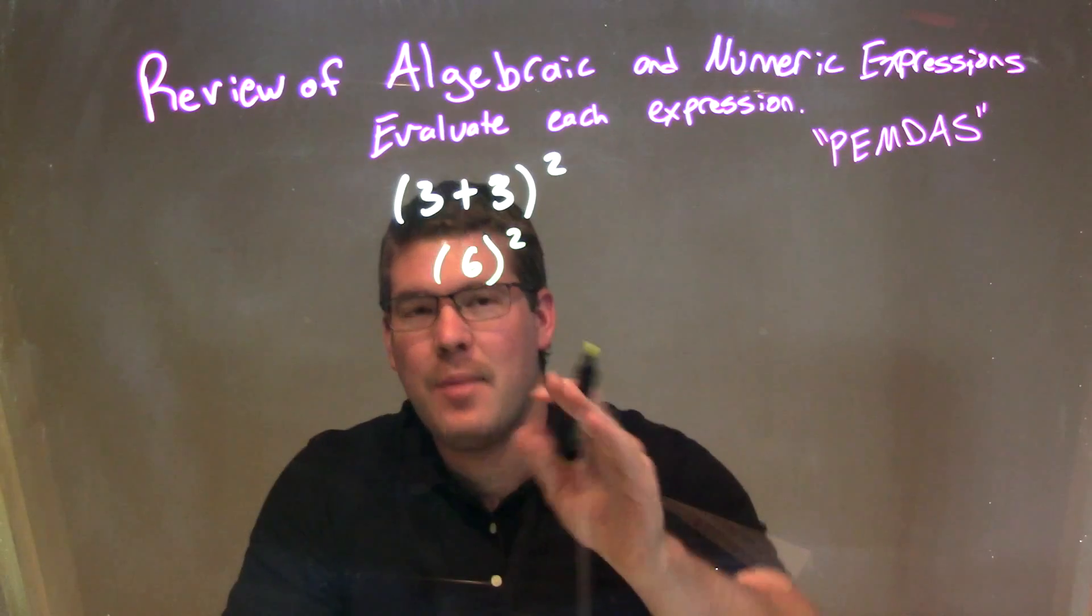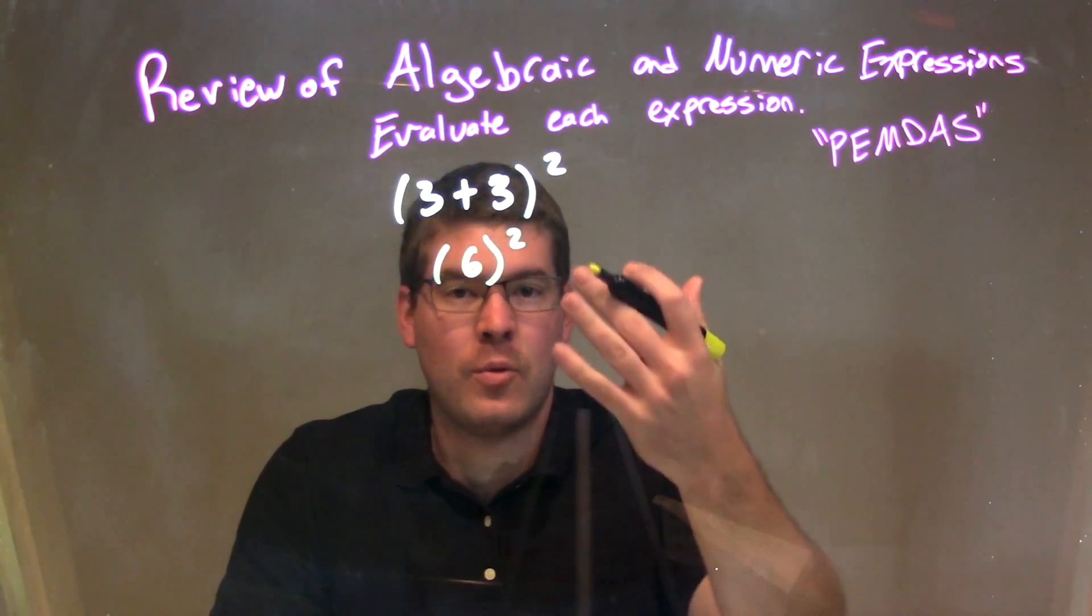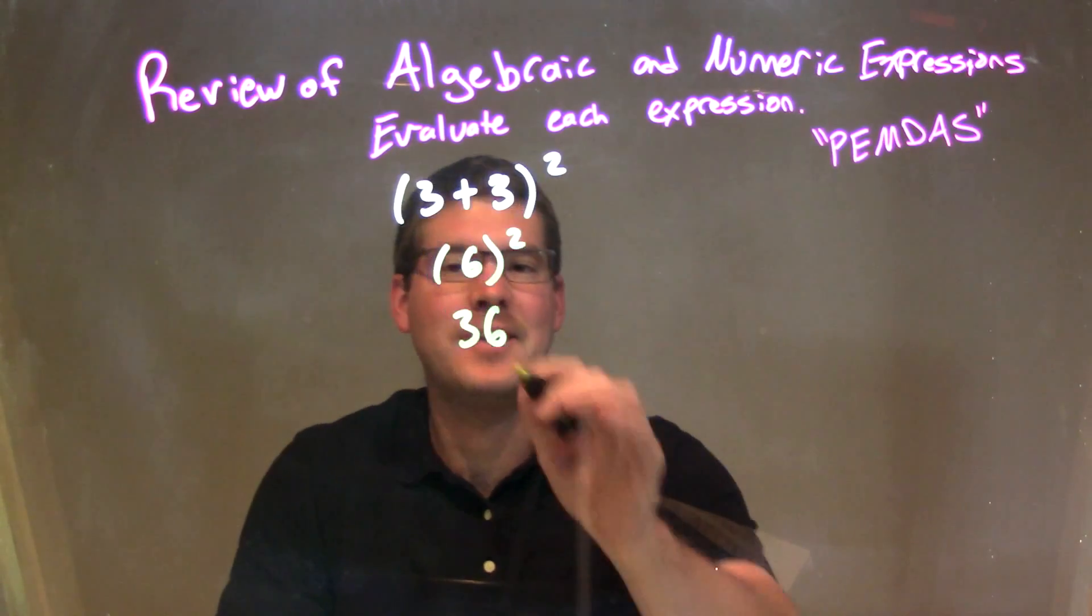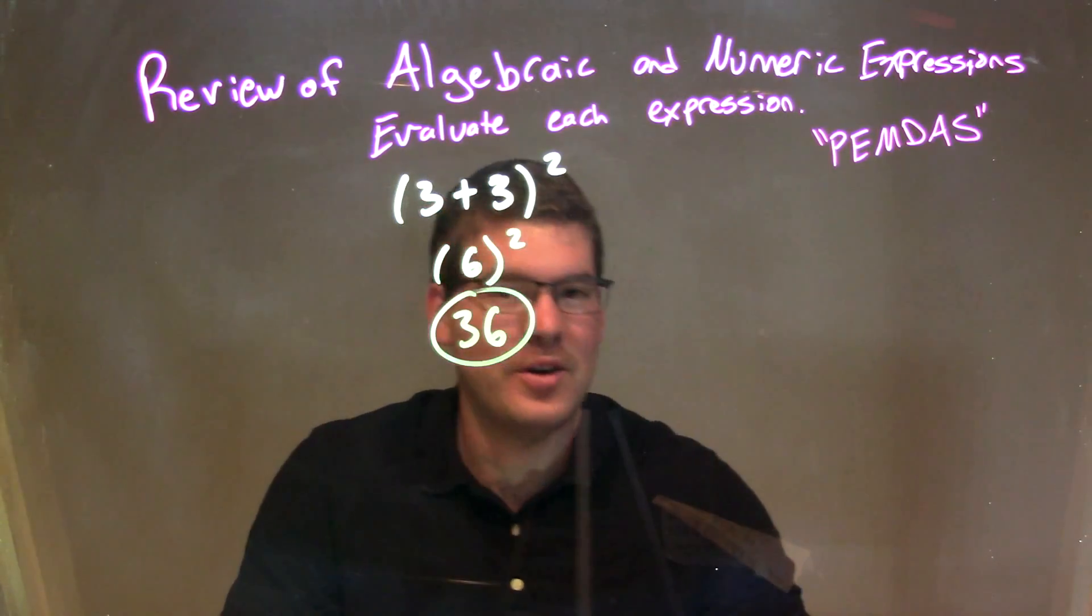At this point, our last step is just squaring that 6. 6 squared is just 36. And there we go. Our final answer is 36.